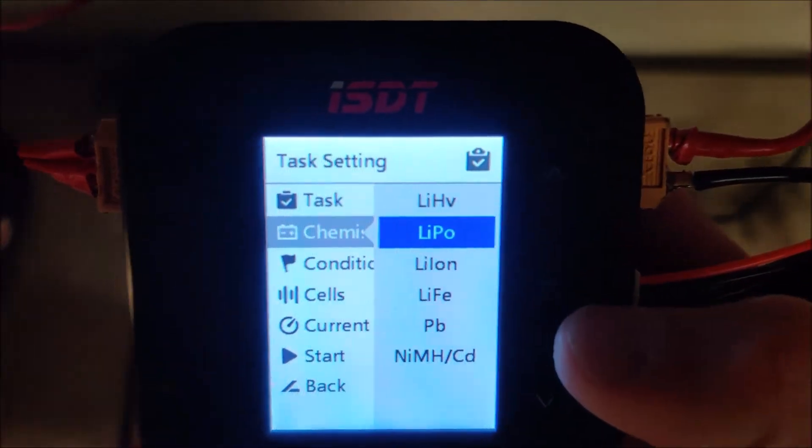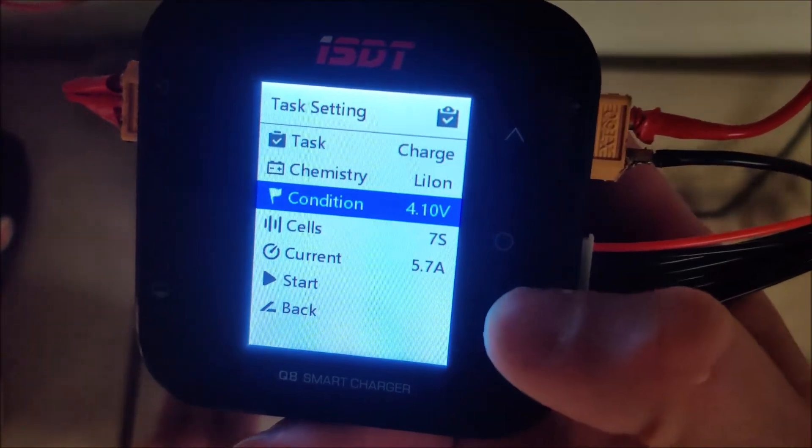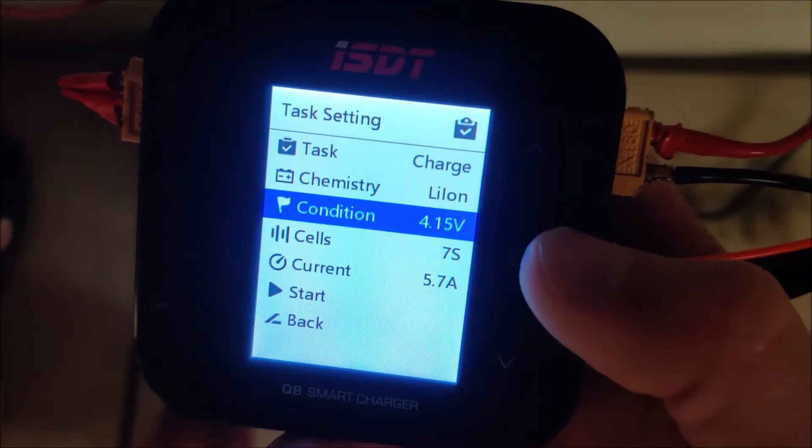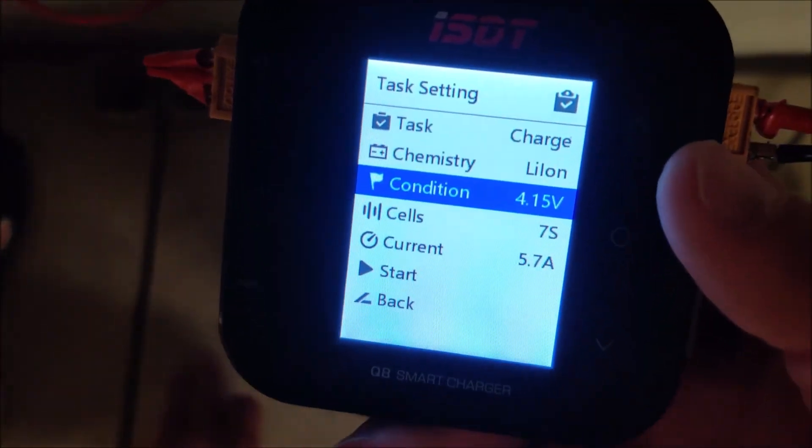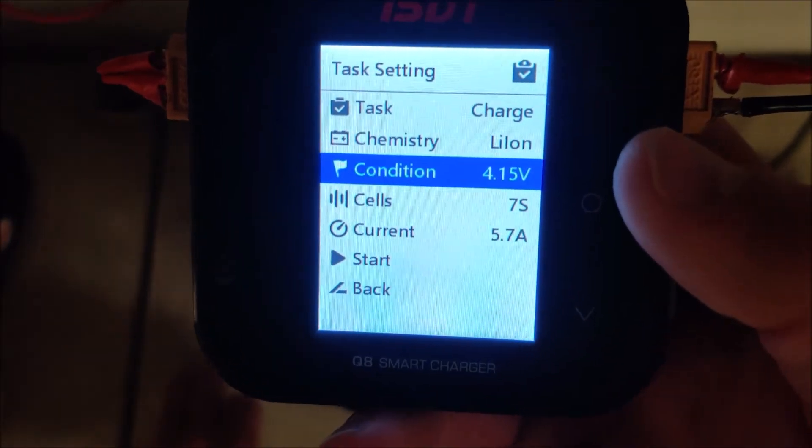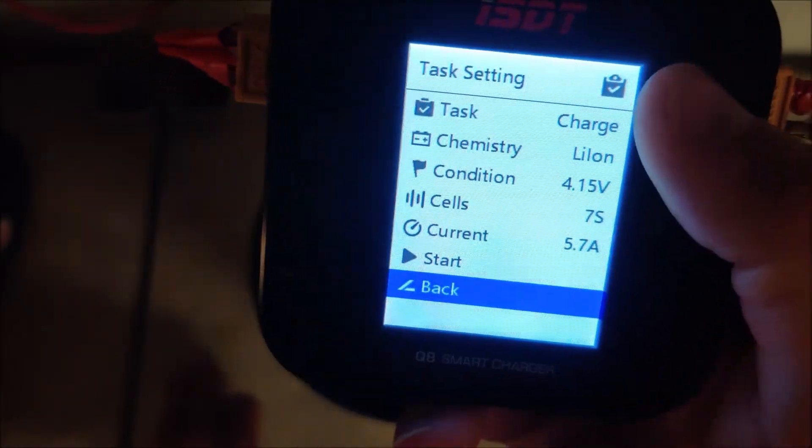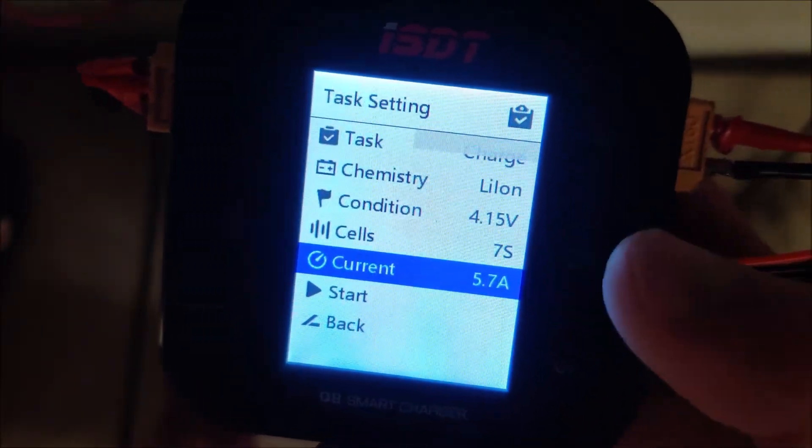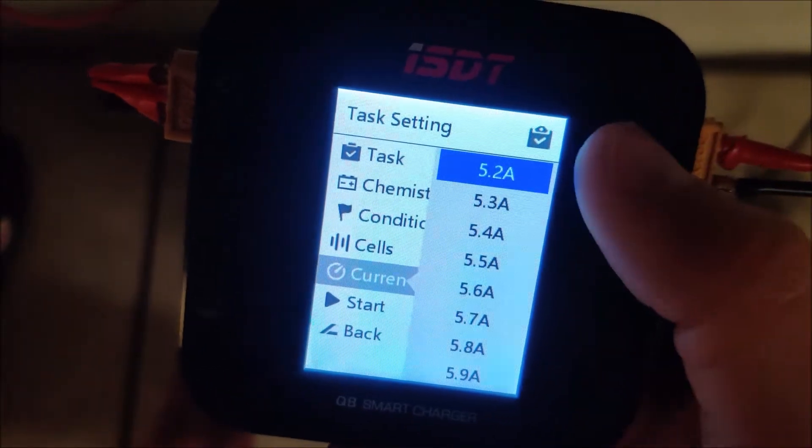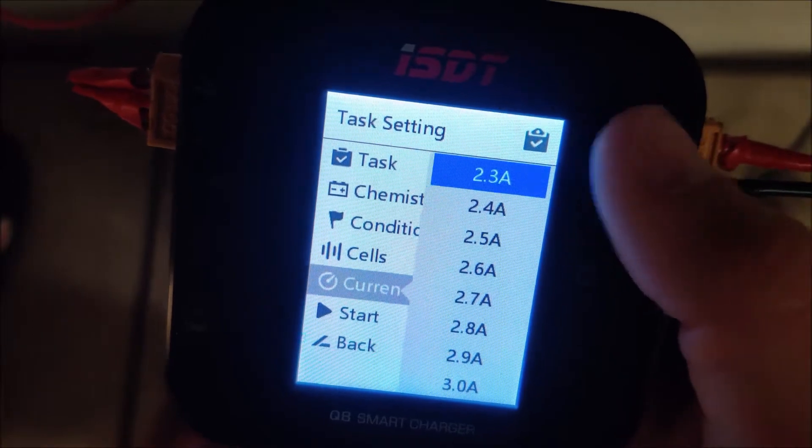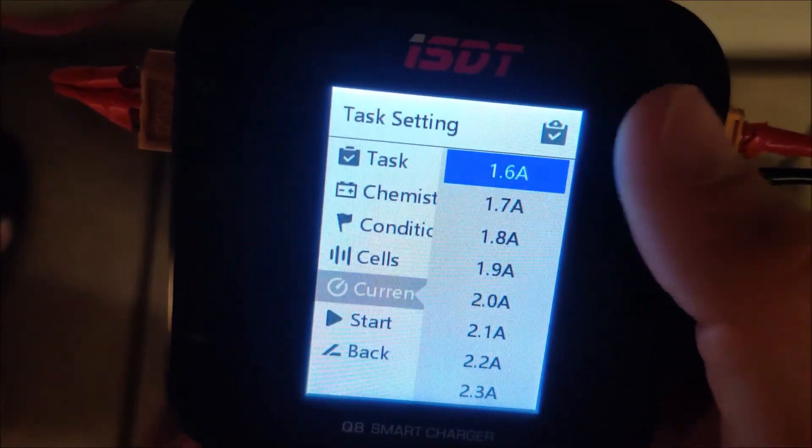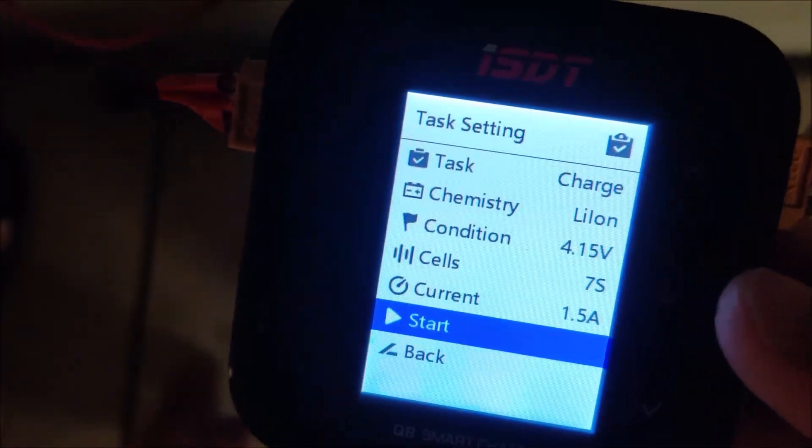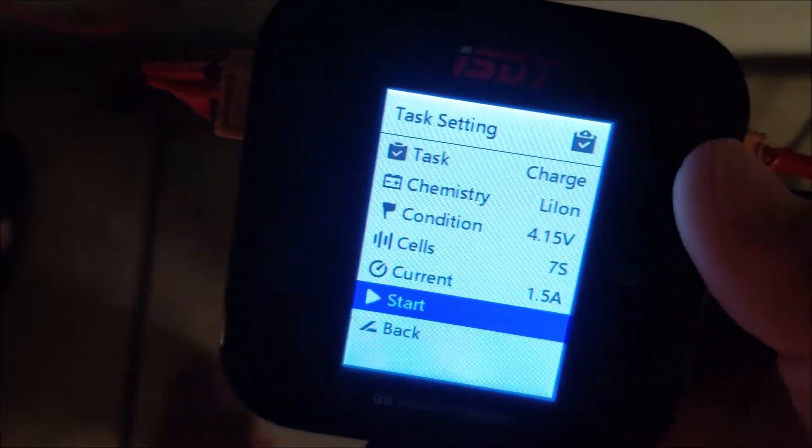Okay. So obviously we're not using lipo. We're using lithium ion. Okay. Condition, so 4.15 is the highest that this will let you go, which is fine because even though 4.2 is your maximum voltage for lithium ion, 4.15 is a nice conservative. You can see it's already detected a 7S configuration because the charge lead is attached now. Current, I only have a two amp power supply attached right now, so I can't push five amps. Let's be conservative. Let's put 1.5.